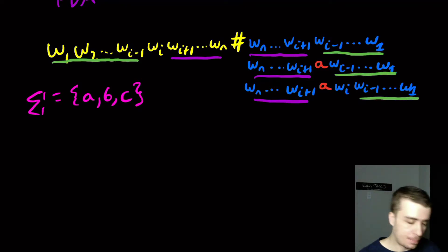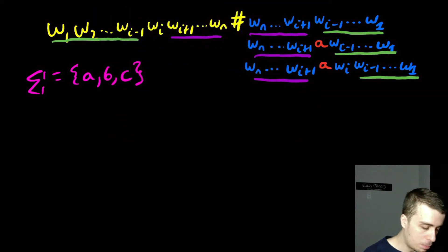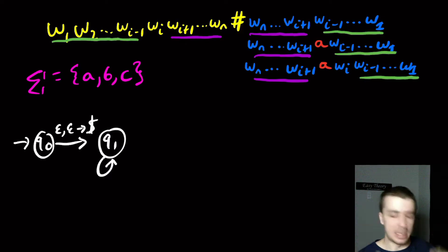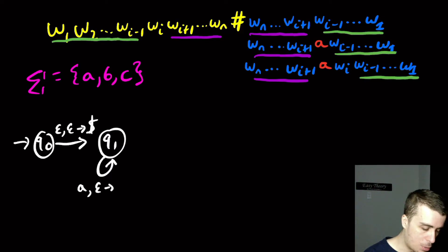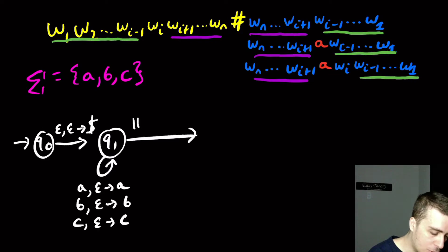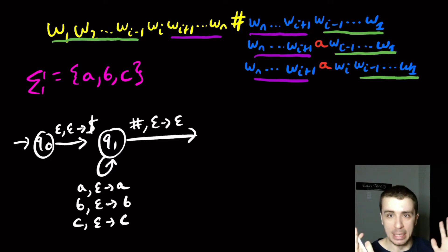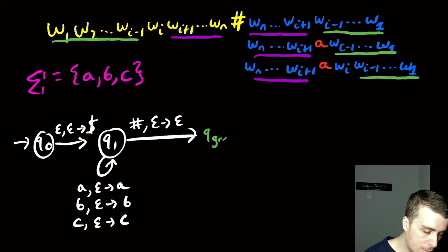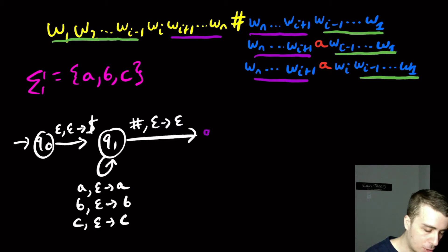Like all PDAs, we push a special bottom-of-stack marker — the dollar sign — at the start. Then in state q1, we push everything on the left side: reading an a pushes an a, b pushes b, c pushes c — no special logic, just getting everything onto the stack. When we encounter the pound sign, we don't touch the stack. Then we move to what I'll call q_purple — I should have used purple — to handle the right-hand side.